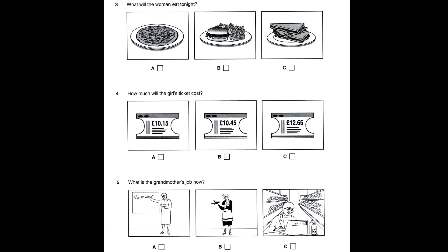Four. How much will the girl's ticket cost? I'm travelling from Banbury to Whitney tomorrow, and I need to be there about 10 in the morning. Can you tell me when the trains leave and how much a single ticket is? The 8.35 train gets in at 9.40. That's £12.65 for a single. The train after that leaves at 9.10 and arrives at 10.15. That costs less because you're travelling after 9. The fare is £10.45. I'll take the second train. Just after 10 is fine. Thanks.